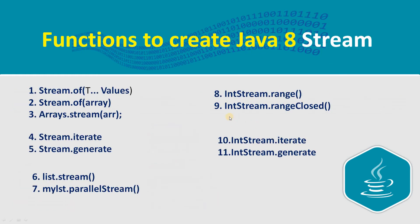The very first one is stream.of — a function where you pass a set of values, and this function will give you a Java stream out of it. Similarly, you can use stream.of for an array as well; that array could be of integer type values or string type values.